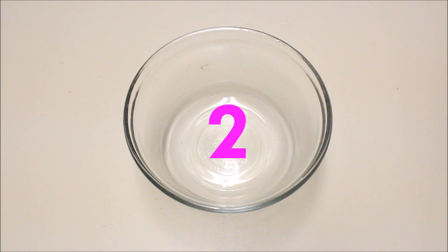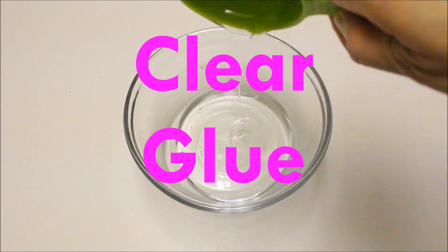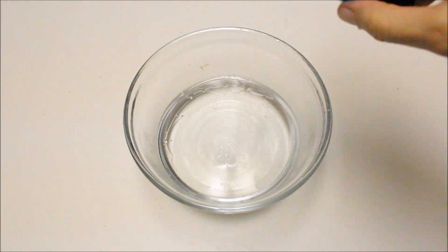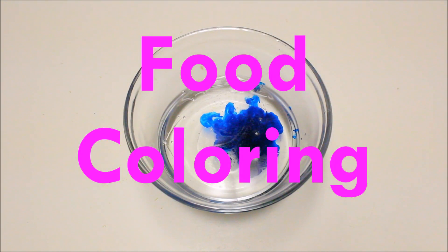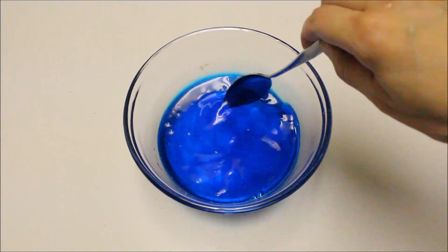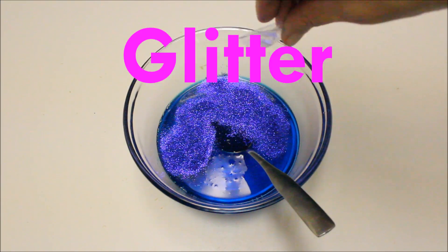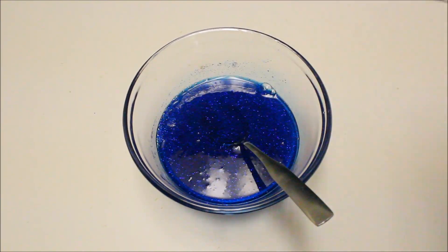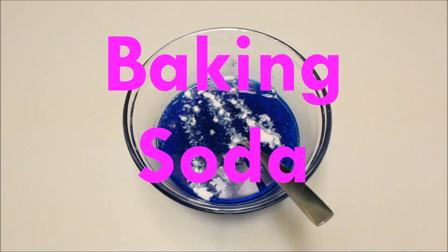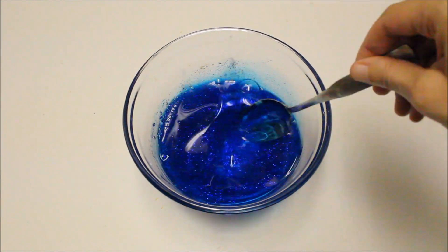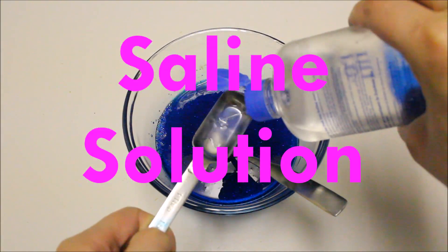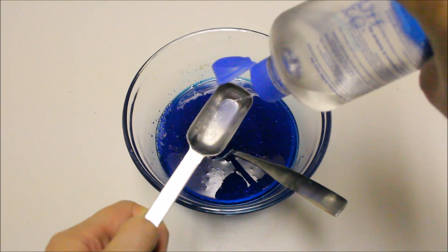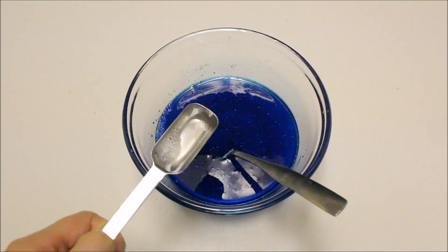For the second type of slime, we need clear glue, water, food coloring, glitter, some baking soda, and some saline solution. This is the solution that links the polymer chains together to form the cross-linked polymers.